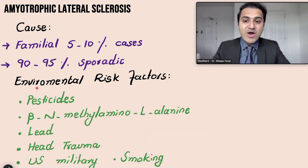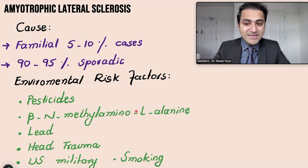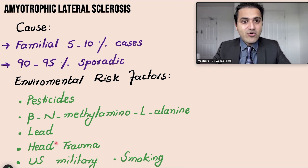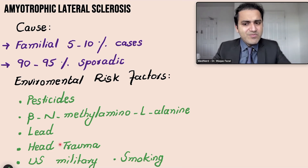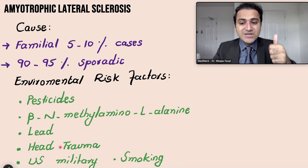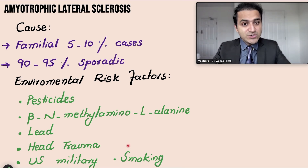There are certain environmental risk factors that increase the risk of developing ALS: exposure to pesticides, exposure to substances containing beta-N-methylamino-L-alanine (BMAA), lead, and head trauma. US military personnel have been shown to have an increased risk of ALS — specific to the US military, not seen in British or French militaries. Smoking also exposes the patient to increased ALS risk.